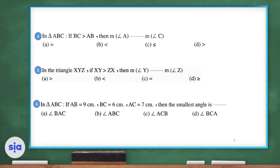Question 4: In triangle ABC, if BC is greater than AB, then the measure of angle A is greater than the measure of angle C. Question 5: In triangle XYZ, if XY is greater than XZ, then the measure of angle Z is greater than the measure of angle Y.